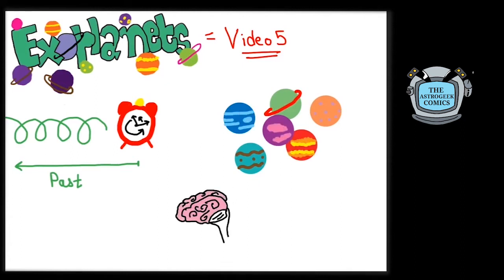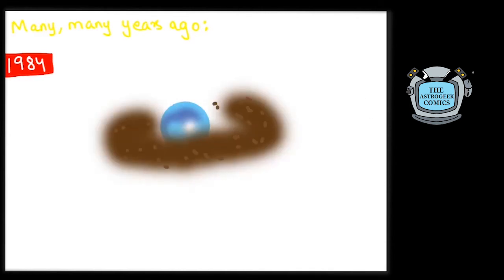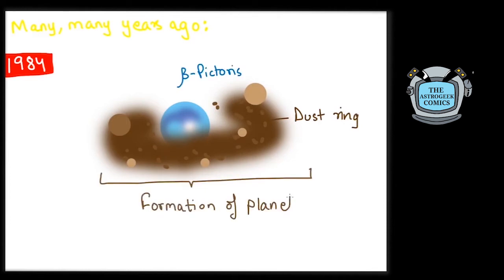We are going to find out some really interesting planets. The journey began much before the first exoplanets were discovered. In 1984, for the first time, a planetary disk was observed around the star Beta Pictoris. This aligned with our explanation of the formation of planets.